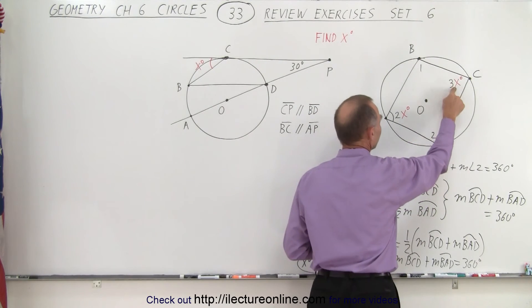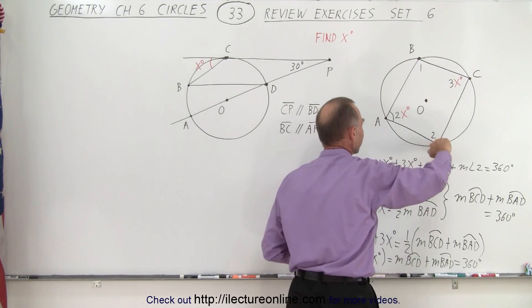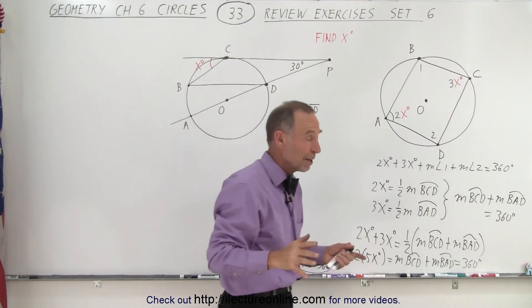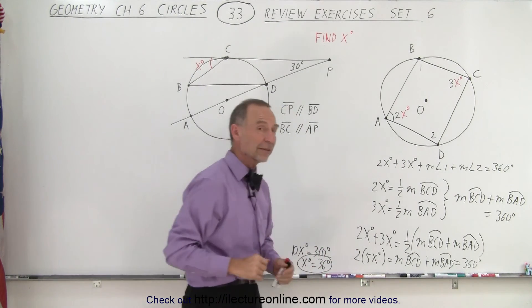So the sum of this angle plus the sum of this angle equals the arc length of this portion of the circle plus the arc length of that portion of the circle. They don't have to be the same. But the sum of the two add up to 360 degrees and that's how we found x.